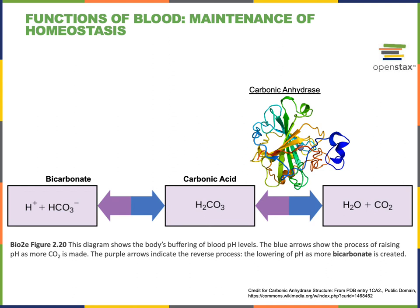If the blood pH starts to get too high, the respiratory system can decrease the rate at which carbon dioxide is removed from the body. Decreasing the pulmonary ventilation rate will lead to a lower rate of removal of carbon dioxide. As more carbon dioxide stays in the blood, this will have the effect of lowering the blood pH, helping to restore the homeostatic set point of 7.4.